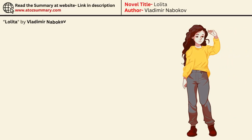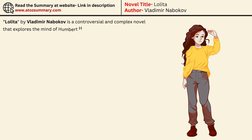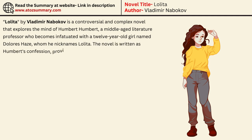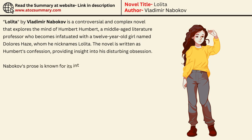Lolita by Vladimir Novikov is a controversial and complex novel that explores the mind of Humbert Humbert, a middle-aged literature professor who becomes infatuated with a 12-year-old girl named Dolores Hayes, whom he nicknames Lolita. The novel is written as Humbert's confession, providing insight into his disturbing obsession. Novikov's prose is known for its intricate language and wordplay, adding layers of meaning to the narrative.